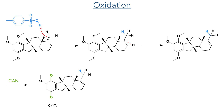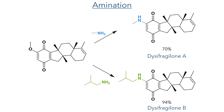With this in place, the compound was then oxidised using cerium ammonium nitrate to produce the quinone ring in an 87% yield. Both Dissi-Fraglones A and B could be accessed from this intermediate by refluxing the compounds with the required amine to generate Dissi-Fraglone A in a 70% yield and Dissi-Fraglone B in a 94% yield.